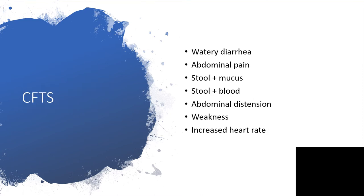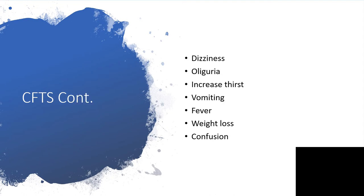The clinical features include watery diarrhea. There may be abdominal pain, though sometimes it is painless, and there's the possibility of stool with or without mucus, or stool with or without blood. You might have abdominal distension, weakness, increased heart rate, dizziness, oliguria, and increased thirst — particularly if the individual is becoming dehydrated or hypovolemic. There's also the possibility of vomiting, fever, weight loss, and confusion.